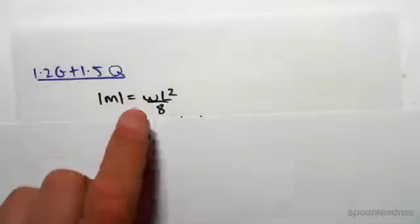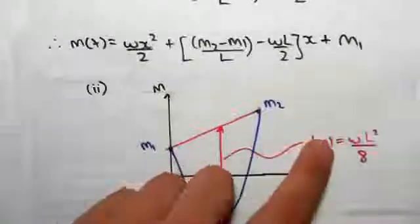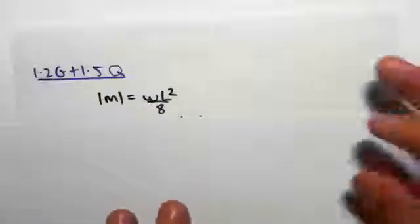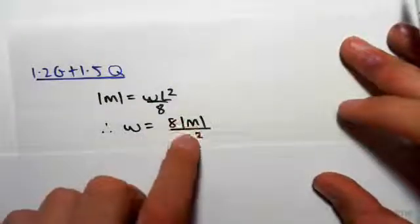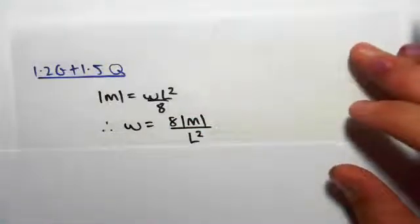So we're going to be using this principle, the second principle we looked at just now. We rearrange that to get W is 8 times the absolute value of M on L squared.